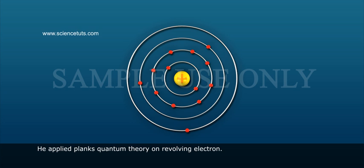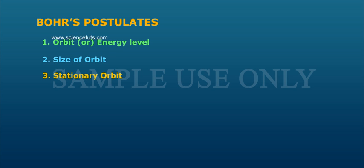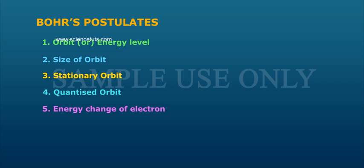He applied Planck's quantum theory on the revolving electron. Bohr's postulates: 1. Orbit or energy level, 2. Size of orbit, 3. Stationary orbit, 4. Quantized orbit, 5. Energy change of electron, 6. Radius of orbit.